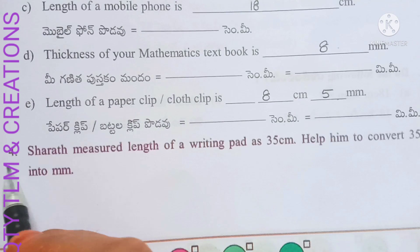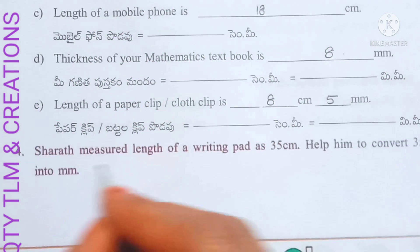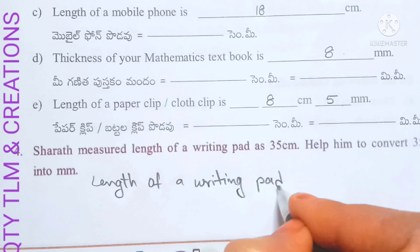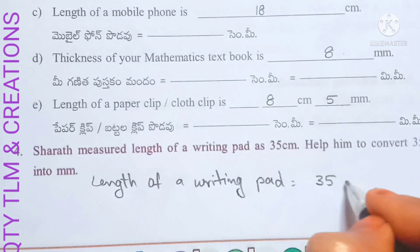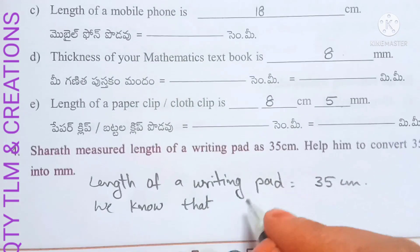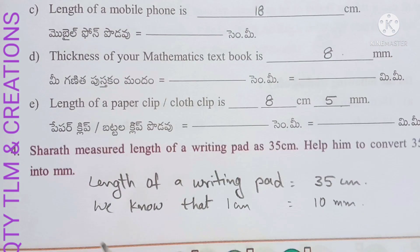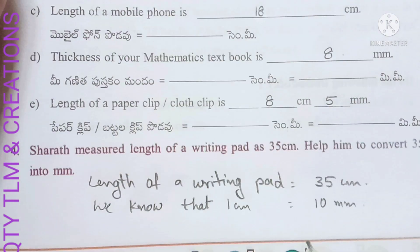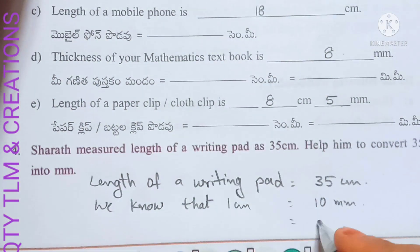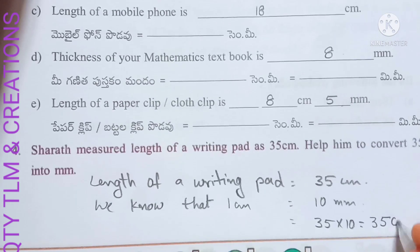Next question: Sharath measured the length of a writing pad as 35 centimeters. Help him convert 35 centimeters into millimeters. The length of the writing pad equals 35 centimeters. We know that 1 centimeter equals 10 millimeters. To convert a higher unit to a lower unit we multiply, so 35 times 10 equals 350 millimeters.